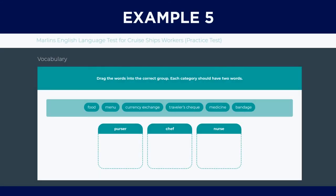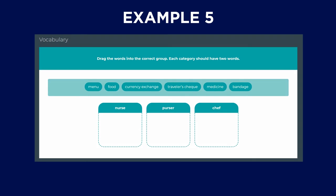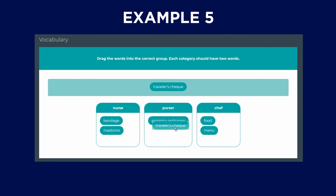For example, for this section: purser, chef, nurse. You have menu, food, currency exchange, traveler's check, medicine, bandage. Let's say if you are really unsure what the word purser is, but you do know what comes under chef and nurse, then drag the words into these two sections first, and the rest will be left for the third section that you are unsure of. Just keep in mind the two words in each section rule. If you have any number of words other than two, something is wrong.